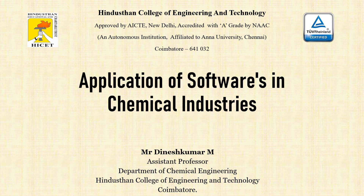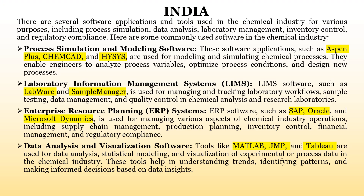Welcome. In this video we are going to talk about applications of software in chemical industries. In this modern world, every industry is almost related to computers or AI and artificial intelligence software. Similarly, chemical industries are also employing artificial intelligence and basic software for smooth running. There are a total of eight different sectors where software is being used for improvement of chemical industries.